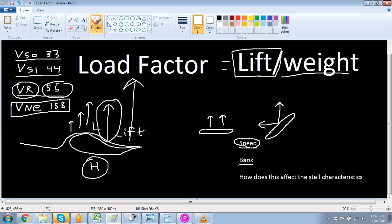Now load factor is also affected by bank. Here we've got a drawing of a wing in straight and level flight. In this condition, 100% of the lift that this wing is generating is going towards keeping the airplane in the air. The lift is in the vertical direction. But when we put the airplane into a bank like this wing here, our lift is then divided. We've got two components: the vertical component of lift and the horizontal component of lift.